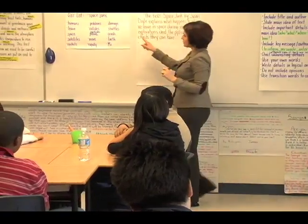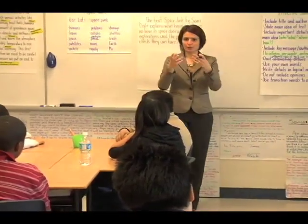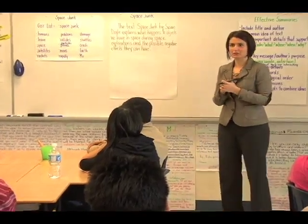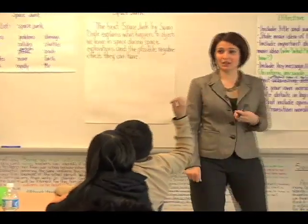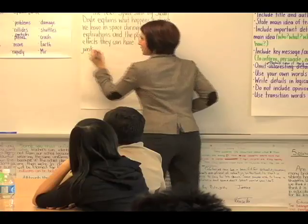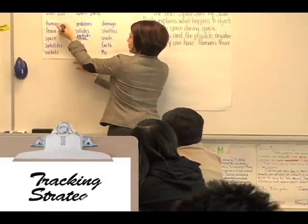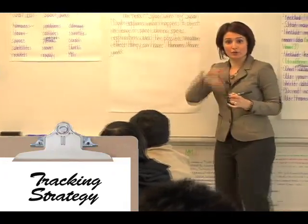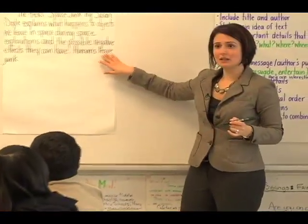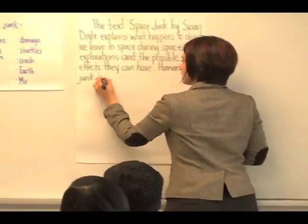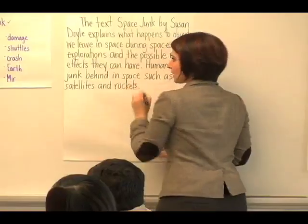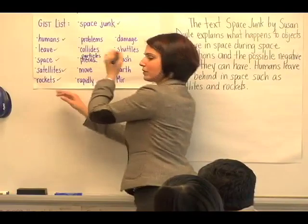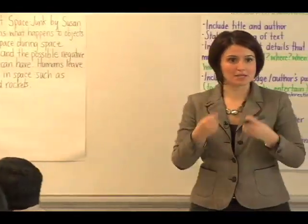Now what we're going to do is use our gist list to put all the main ideas together. How can we put the first few gist list words together? Humans leave objects in space such as satellites and rockets. Okay, so we have humans — we already have space junk. Humans leave — and I can cross it off as I go so I know that I've covered my gist list. Humans leave junk behind in space, such as satellites and rockets. I've included five of my gist words in one sentence. Summarizing — making it brief.